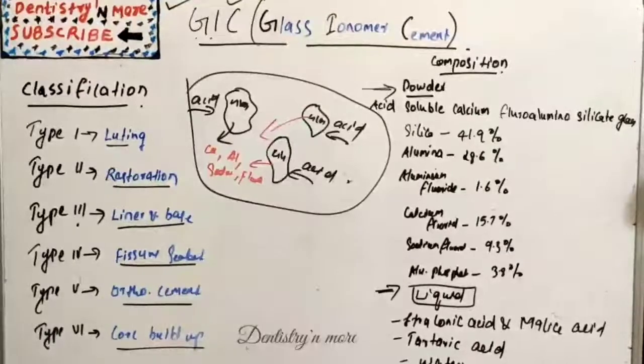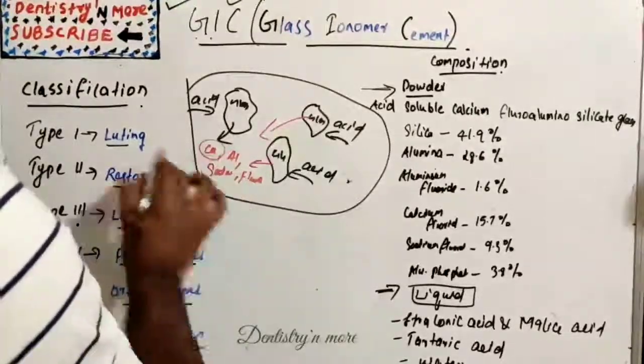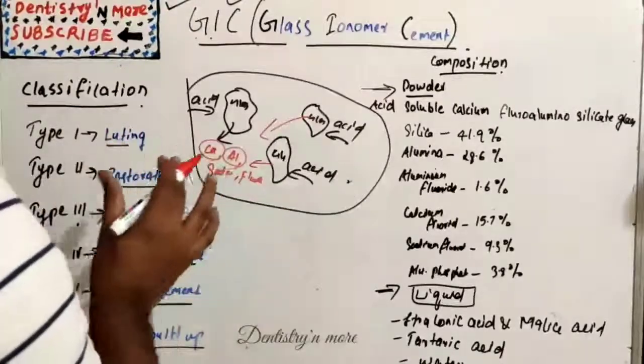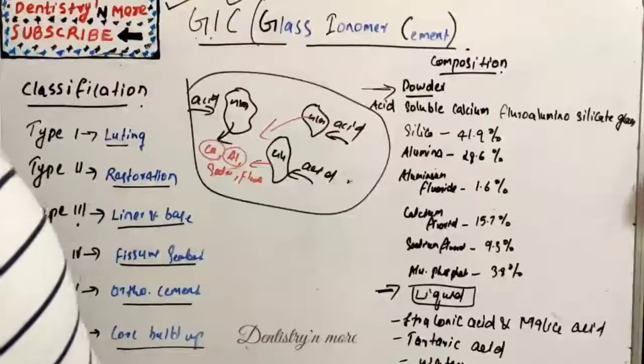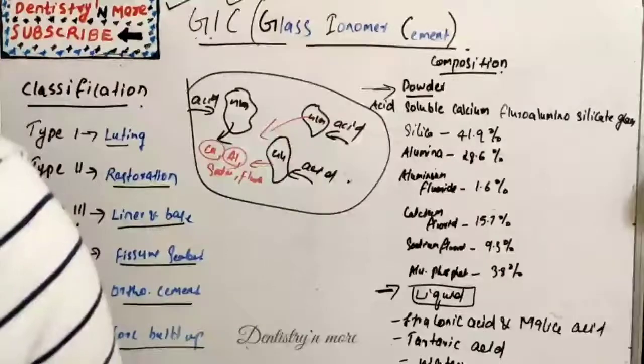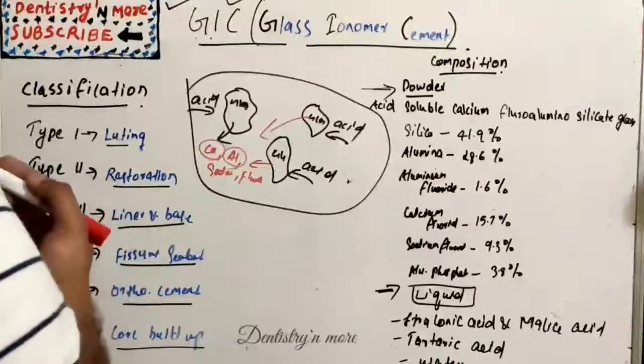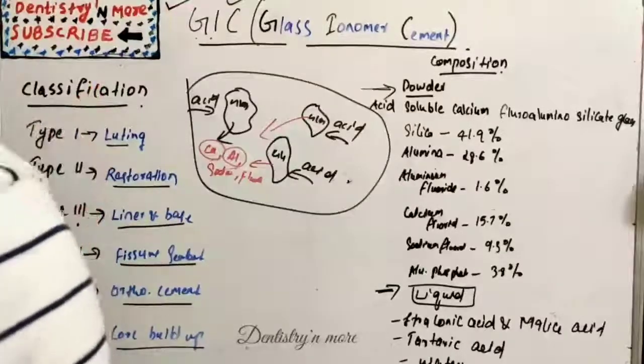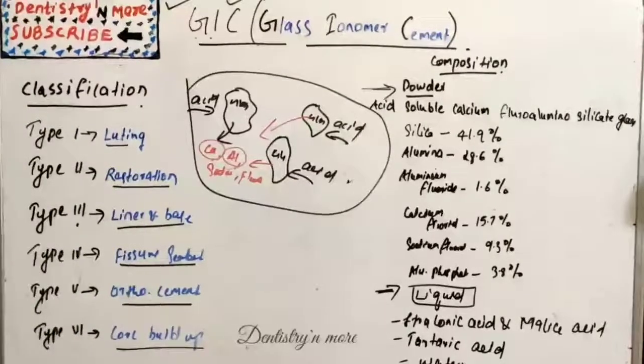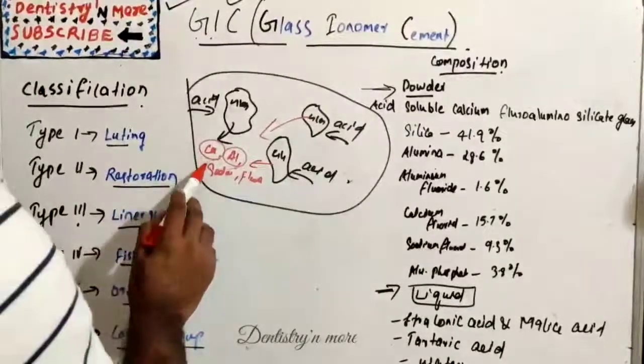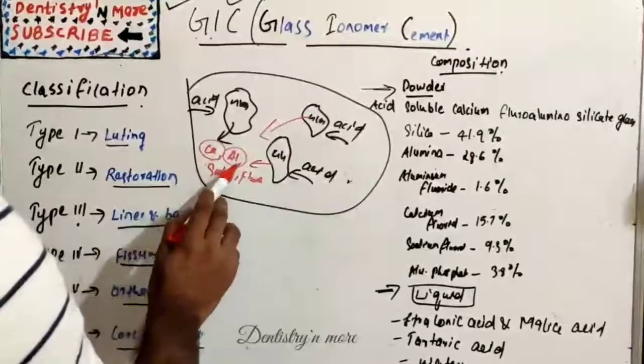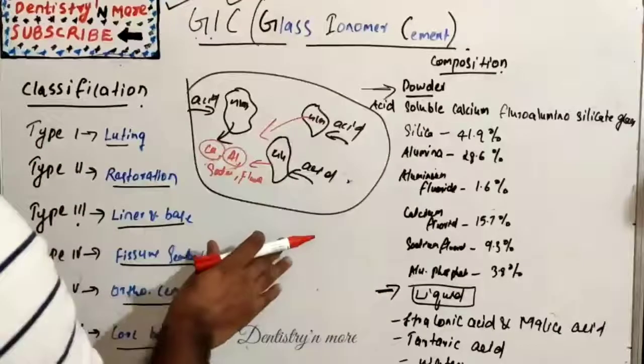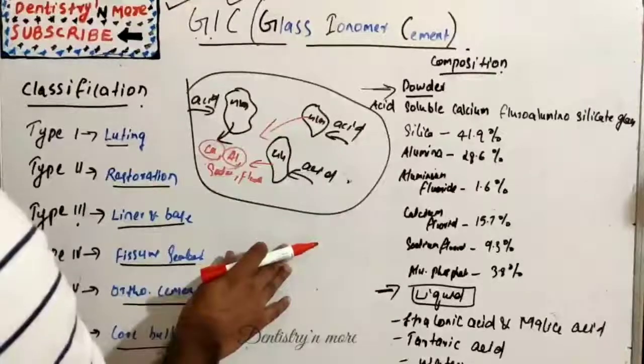Calcium poly salts are formed first, then followed by aluminum poly salts which cross-link with poly anion chain. The set cement consists of unreacted powder particles surrounded by silica gel in an amorphous matrix of hydrated calcium and aluminum poly salts. This calcium poly salt is responsible for the initial set and aluminum poly salt for the final set.